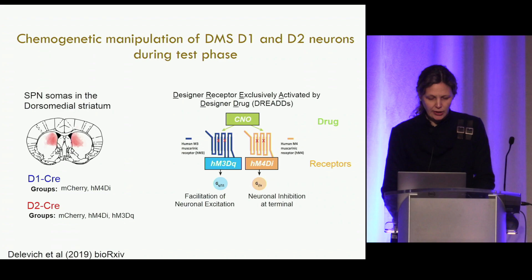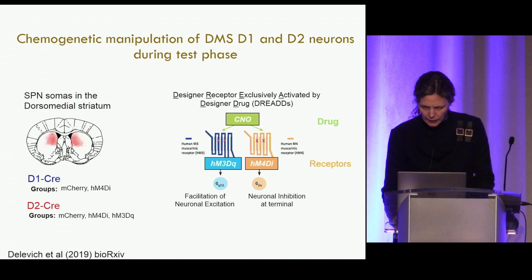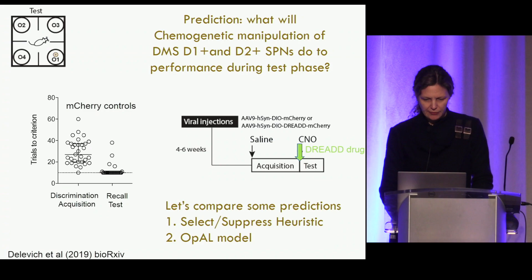We'll facilitate neuronal excitation or inhibition in either D1 or D2 spiny projection neurons in the dorsal medial striatum, bilaterally. The drug is given just before the test phase — when animals should be really good at suppressing a choice. Controls also receive saline during acquisition and CNO before the test, so all groups experience the same injection procedure.